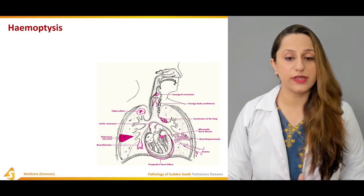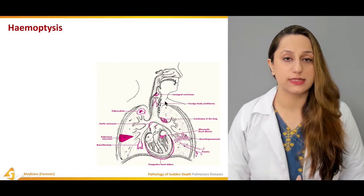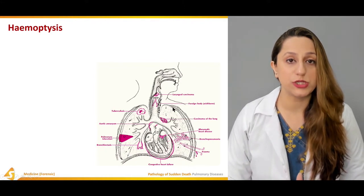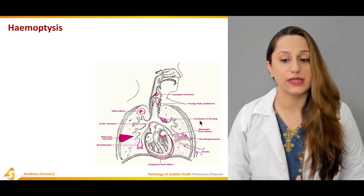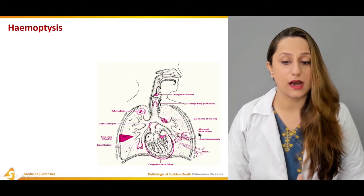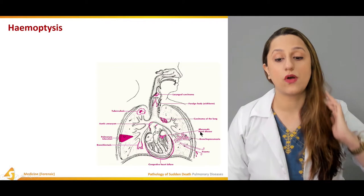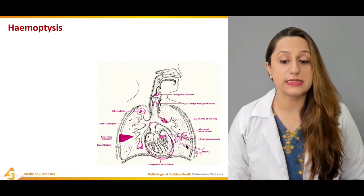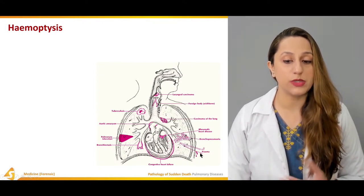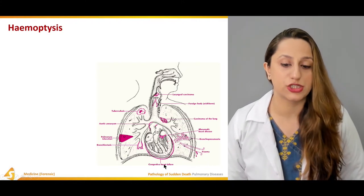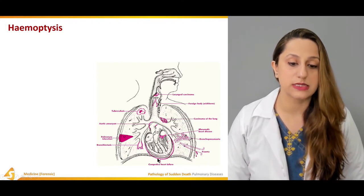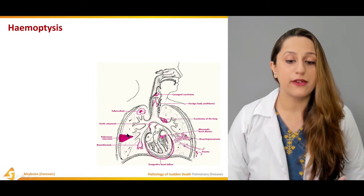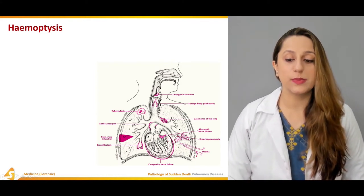Haemoptysis occurs due to some underlying causes. These include laryngeal carcinoma, foreign body obstruction usually in the windpipe, carcinoma of the lung, rheumatic heart disease, bronchopneumonia, trauma, and congestive heart failure.